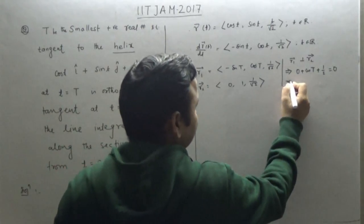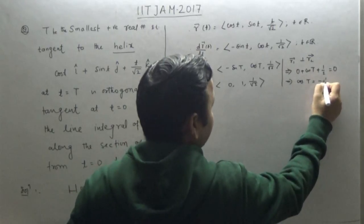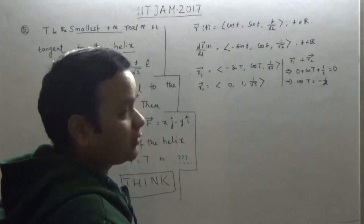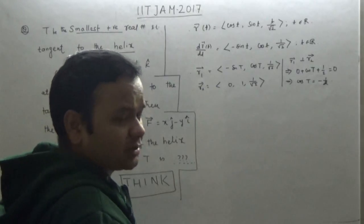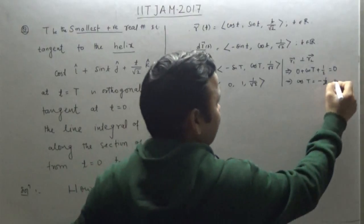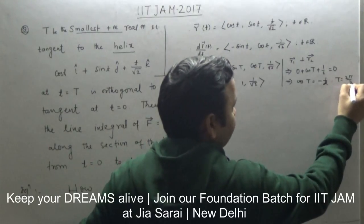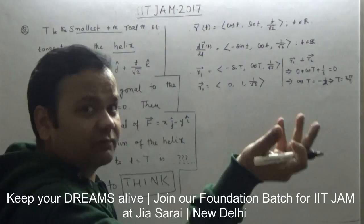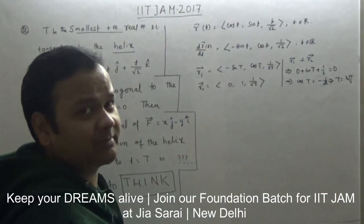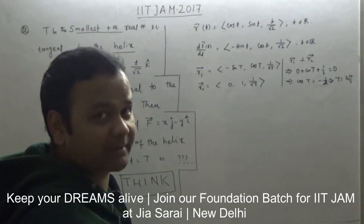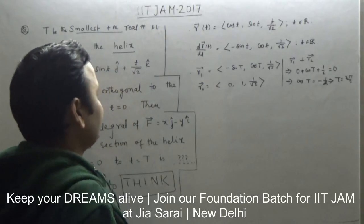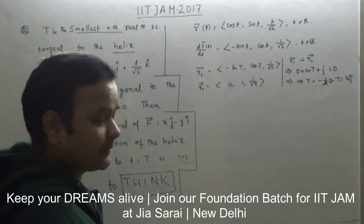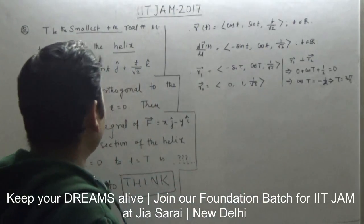Taking the dot product r1 · r2 = 0 gives: (−sin T)(0) + (cos T)(1) + (1/√2)(1/√2) = 0, which simplifies to cos T + 1/2 = 0, so cos T = −1/2. The smallest positive T for which cos T = −1/2 is in the second quadrant. The solutions in [0, 2π] are 2π/3 and 4π/3, so the smallest is T = 2π/3.